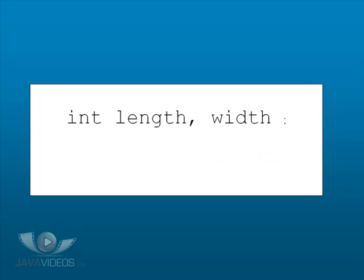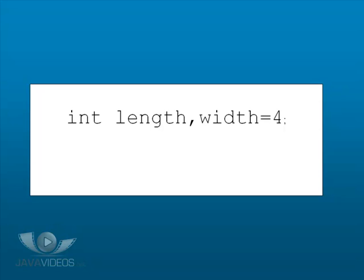Multiple variables can also be declared on the same line, though all variables must have the same type. So in this instance, length and width are both being declared as type int. Different assignments can also be made within one line — so here we have 5 being assigned to length and 4 being assigned to width. But be warned: in this instance, length is not set to 4. It has not been assigned any value and is still undefined.